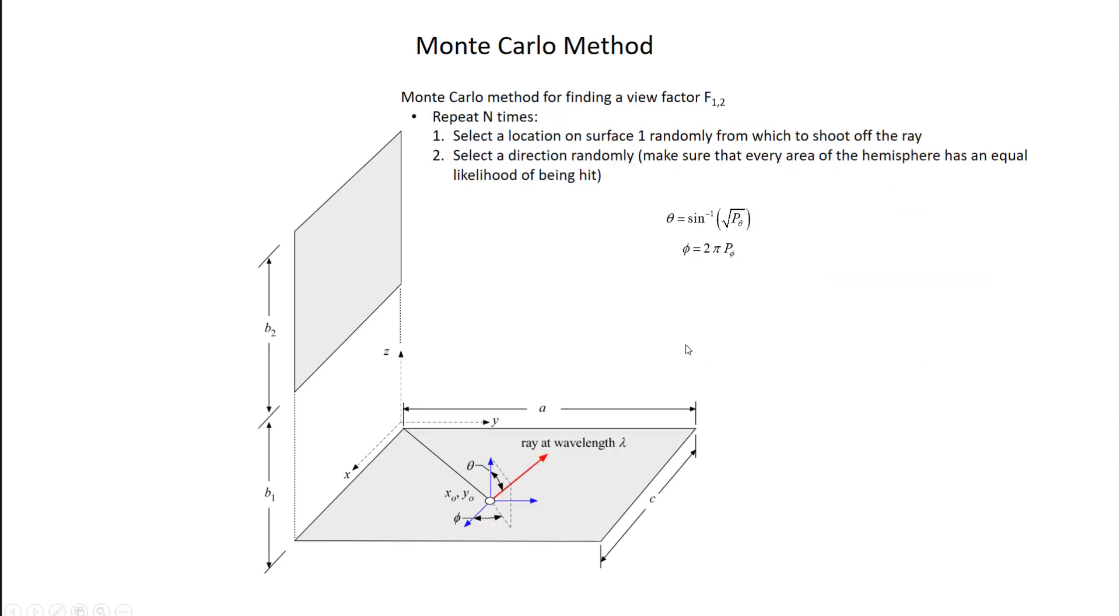Alright, so the next step is to select the direction, and we do this randomly as well. So here's my location. Now I've got to select a direction to shoot the ray off in. It's going to be selected based on these two polar coordinates, theta and phi.